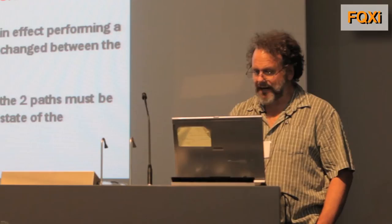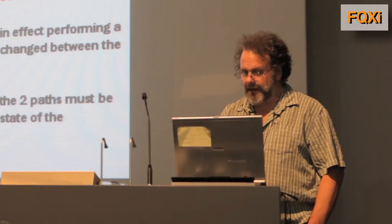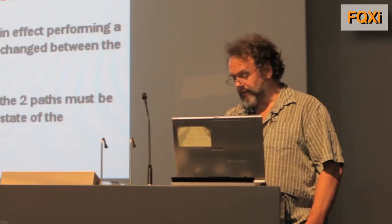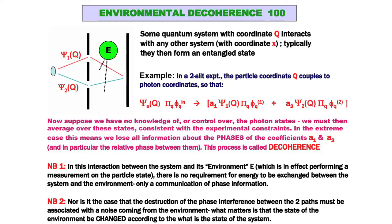But now, if we're not supposed to know what these bath degrees of freedom are doing, we have to average over them. And that, in general, destroys — partially or completely — the relative phase between psi_1 and psi_2. And that is what is conventionally meant by environmental decoherence. I should emphasize this is not how it typically works, but you notice that this is a destruction of phases.